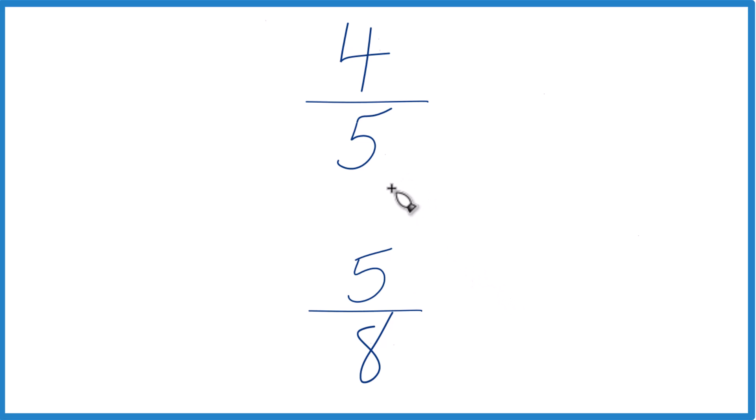The other way to do this is find a common denominator. Right now we have 5 and 8, but if those were the same, we could then just compare the numerators here and we know which is greater, 4 fifths or 5 eighths.